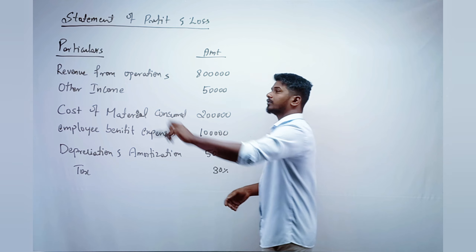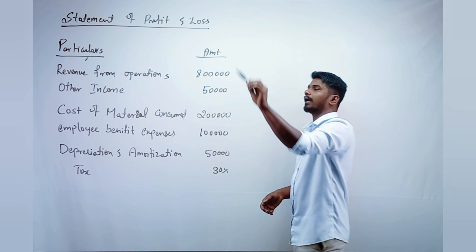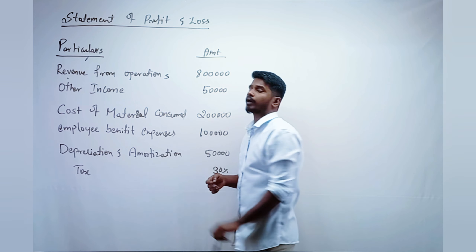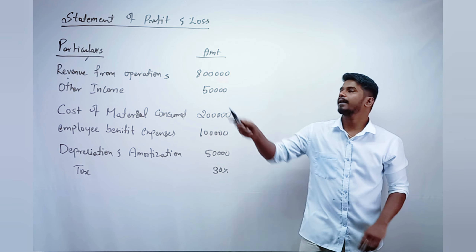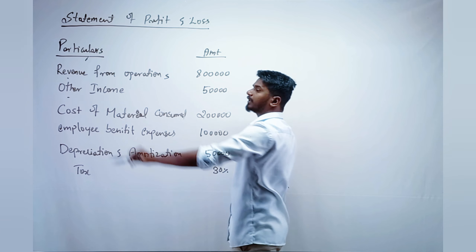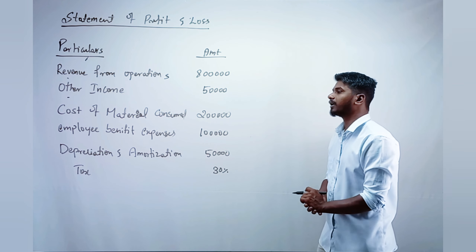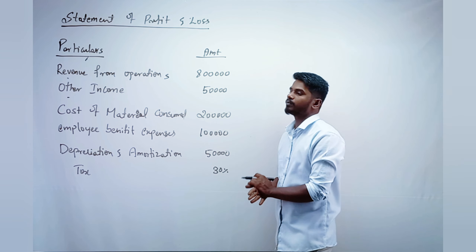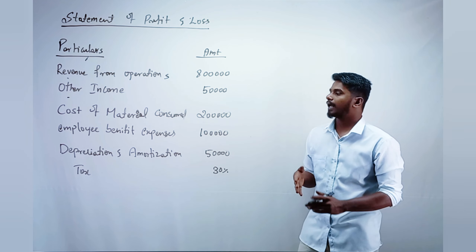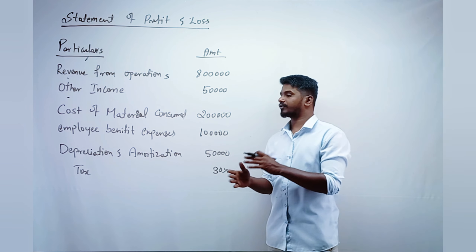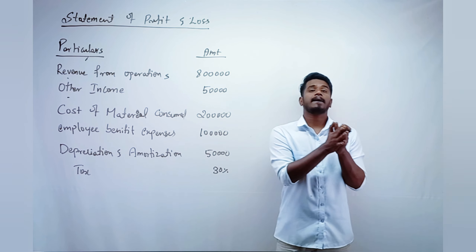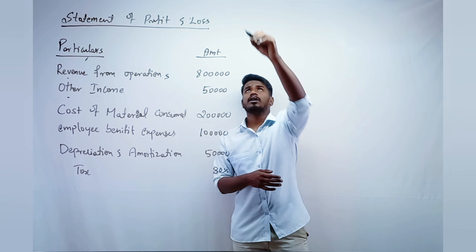The question gives us the following particulars and amounts: Revenue from Operations is 8 lakh rupees, Other Income is 50,000, Cost of Material Consumed is 2 lakh, Employee Benefit Expenses is 1 lakh, Depreciation and Amortization is 50,000, and Tax is 30 percent.